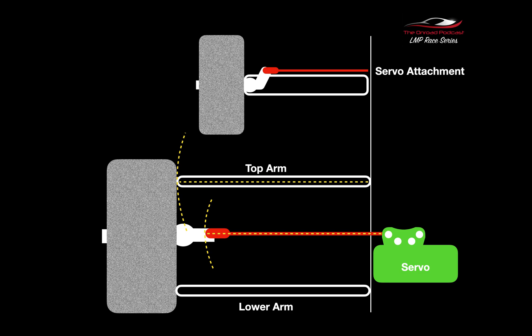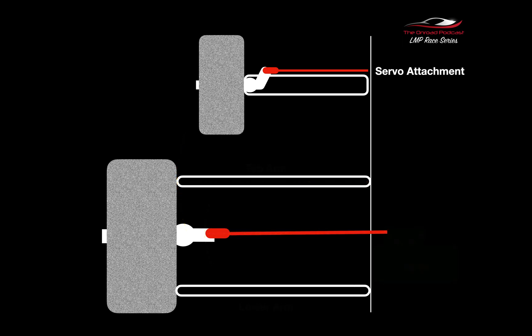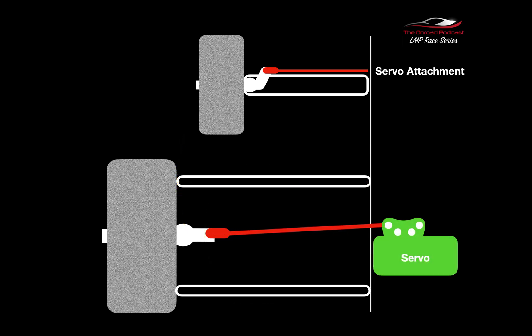That's signified by the hashed line at the end of the red turnbuckle. When we usually get an RC car and we're putting it together, invariably the turnbuckle isn't parallel to the upper and lower arm.